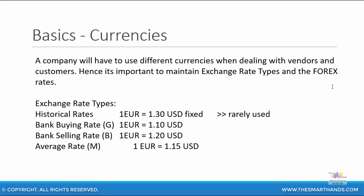You can maintain a base exchange rate. For example, if your company's primary currency is USD, then you can maintain your base exchange rates from USD to EUR, USD to AUD, USD to INR, or multiple different currencies. There are different types of exchange rate types available in the system. The most commonly used one is the average rate, denoted by the letter M. You also have historical rates, which are rarely used, and also the buying rate and selling rate with IDs G and B respectively. But most of the time we'll be using M.